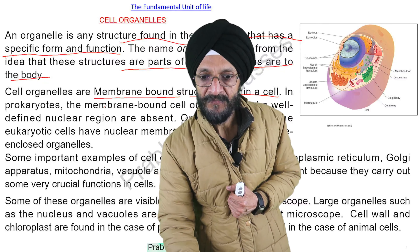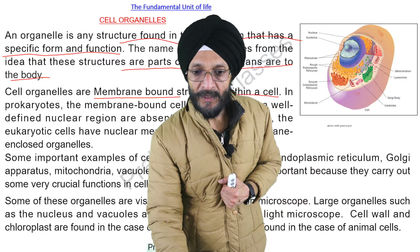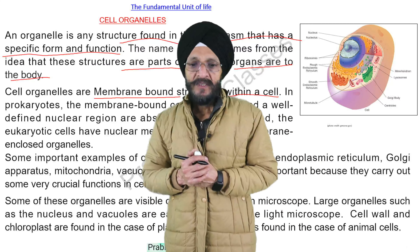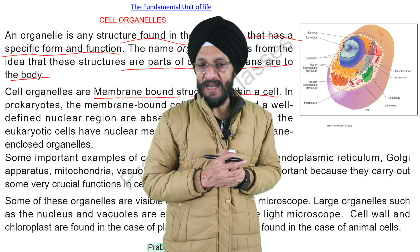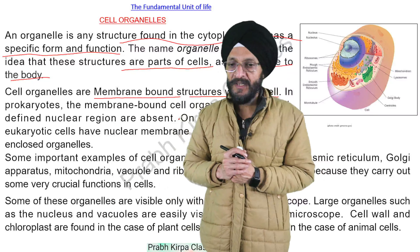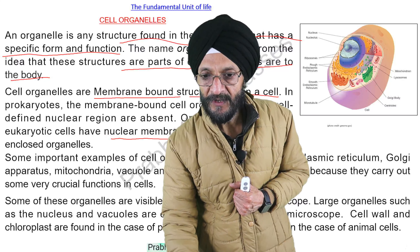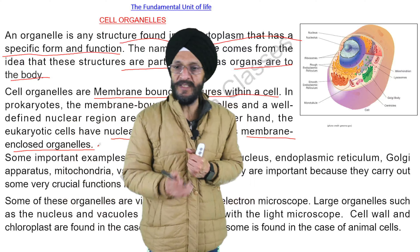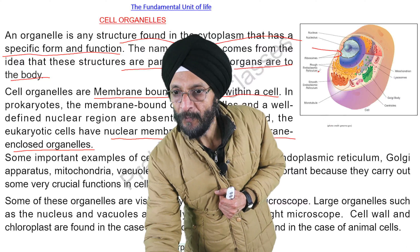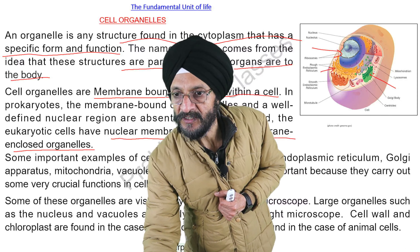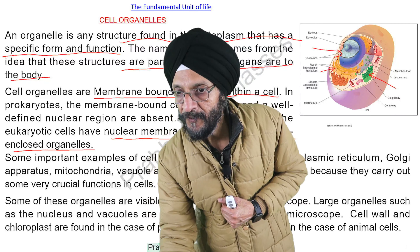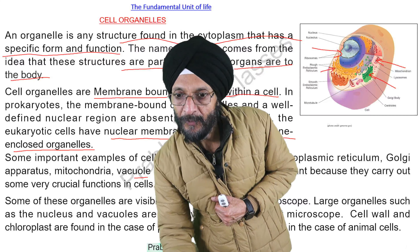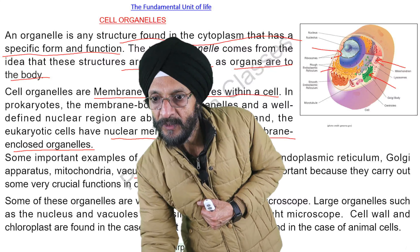In prokaryotes, the membrane-bound cell organelles and a defined nuclear region are absent. In eukaryotic cells, however, they have a nuclear membrane as well as membrane-enclosed organelles. Some important examples of cell organelles are: nucleus, endoplasmic reticulum, Golgi apparatus, mitochondria, vacuole, and ribosomes — which appear as small dots in the cell diagram.